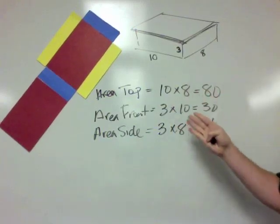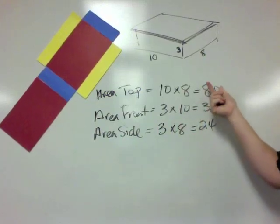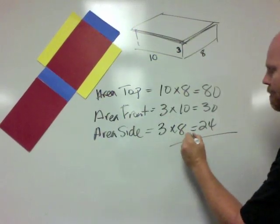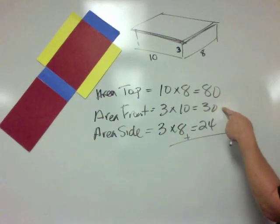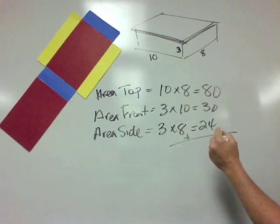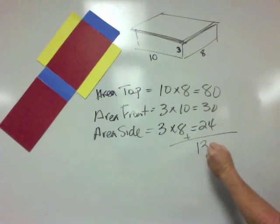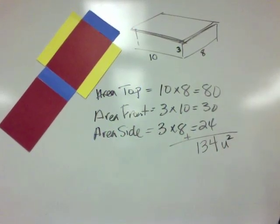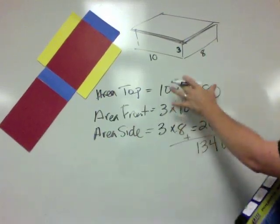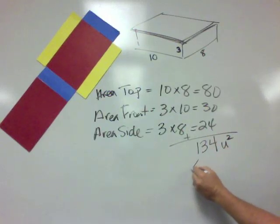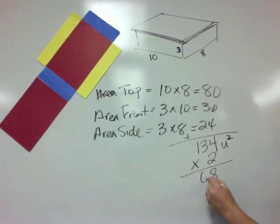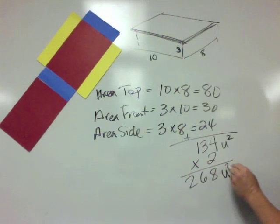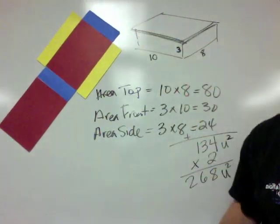So we've got three sides. We know that there's six. We just need to take each one of these and double it, and then add, or we can just add these up and then double. So 80 plus 30 is 110, plus another 24 is 134 square units or units squared. But that's not it. That's only half the answer because that's just three sides and we know we have six. So we have to take this answer, multiply by 2, and we get 268 square units is the surface area of this rectangular prism.